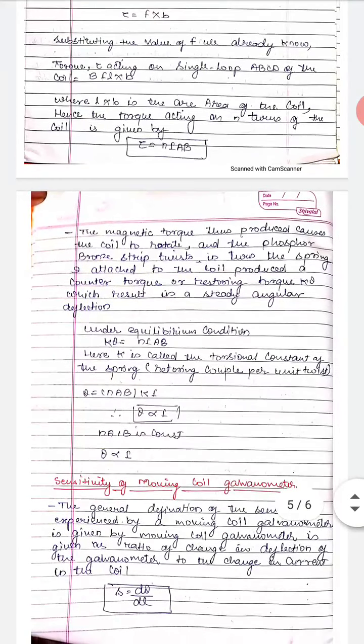The magnetic torque thus produced causes the coil to rotate, and the phosphorus bronze strip twists. The spring attached to the coil produces a restoring (counter) torque equal to kθ. This results in a steady angular deflection. Under equilibrium condition, kθ = NIAB, meaning the net resultant force equals zero.